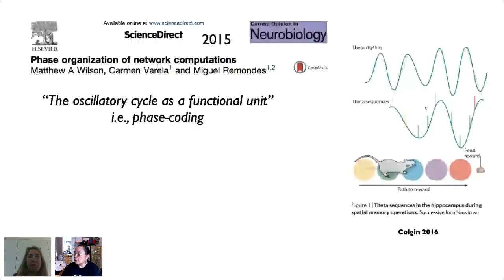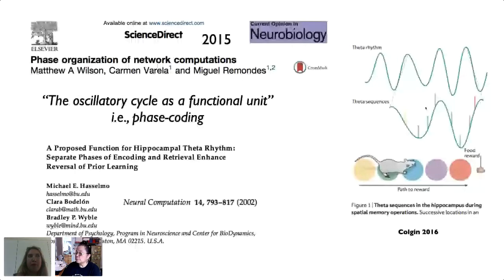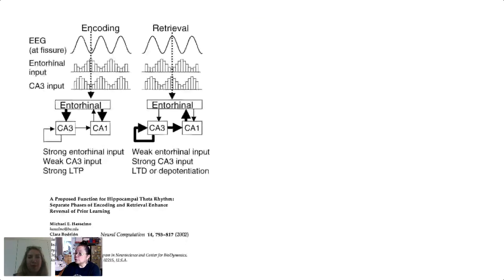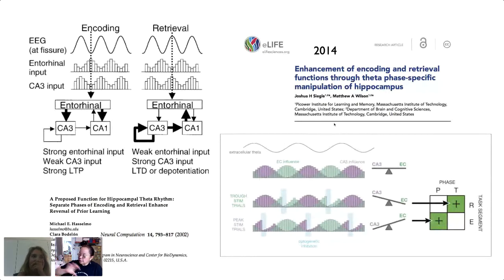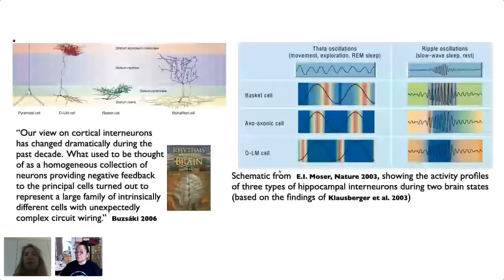Hasselmo and colleagues proposed that theta rhythm separates phases of encoding and retrieval: at the trough there is stronger entorhinal input for retrieval, and CA3 drives encoding. Siegle and Wilson experimentally confirmed enhancement of encoding and retrieval in a phase-specific manner using closed-loop optogenetic stimulation targeting inhibitory fast-firing cells to affect theta oscillation phase-specifically. But thinking about this process requires acknowledging that inhibitory cells are not a homogeneous collection — they have very specific targets and circuit wiring.